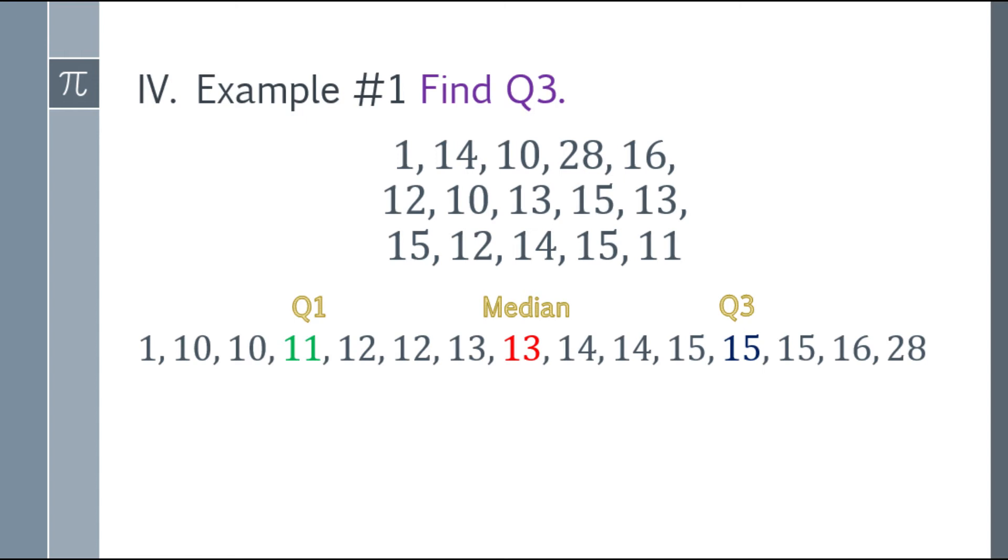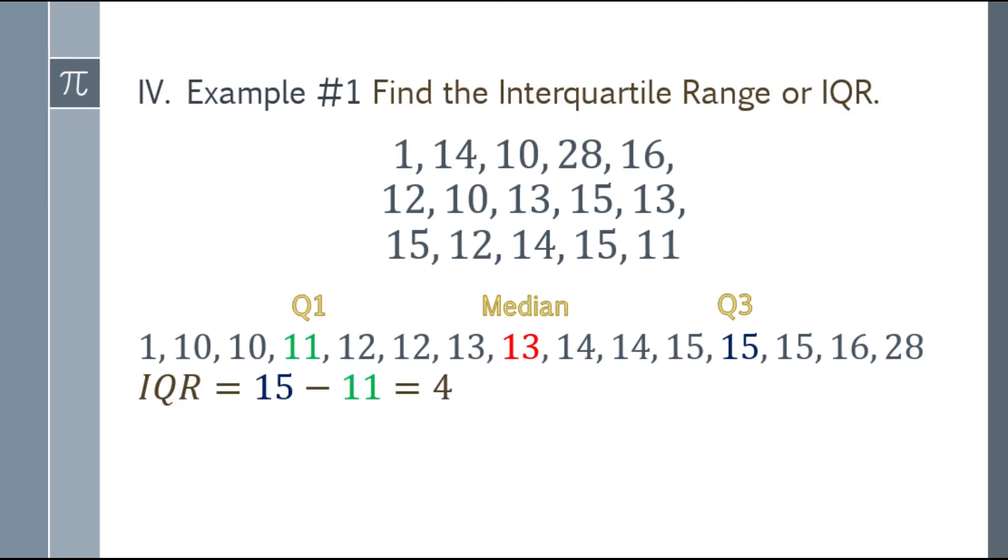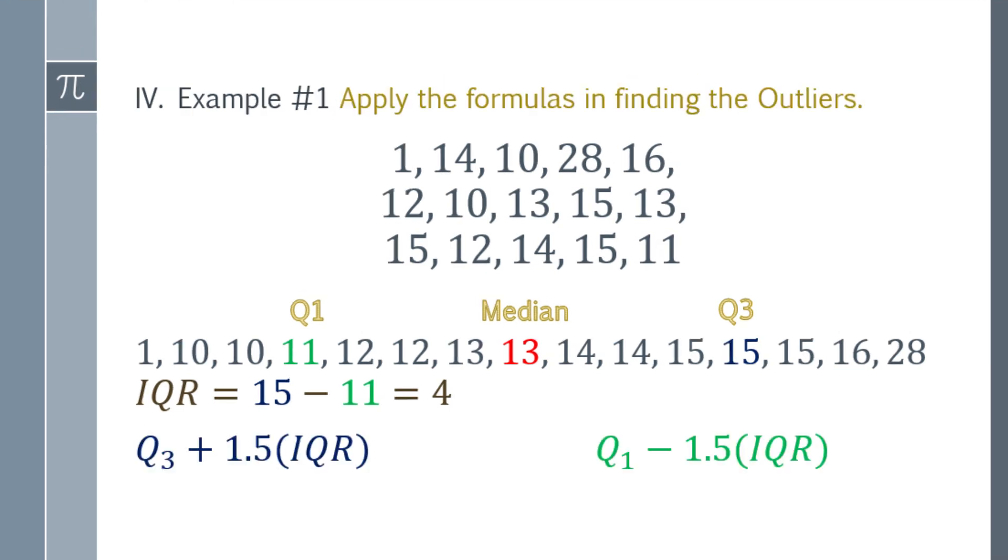Kahit naman natin yung Q1 and Q3, you may now find the, you can now find the interquartile range or IQR. Paano ulit hanapin yun? Yung quartile 3, maminos mo siya sa Q1. That will be 15 minus 11, that will be 4. So IQR natin ay 4.